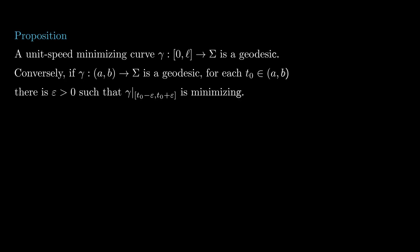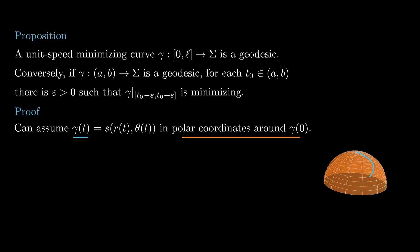Now we check that minimizing curves are geodesics, and conversely, any geodesic is locally a minimizing curve. To prove the first implication, we take a minimizing curve parameterized by arc length, gamma in sigma. We need to prove that it is a geodesic. Since being a geodesic is a local condition, and any restriction of a minimizing curve to a smaller domain is also a minimizing curve, we can assume the curve gamma is short enough so that it can be written as s in polar coordinates around gamma of 0.